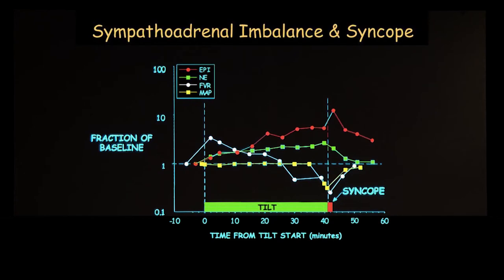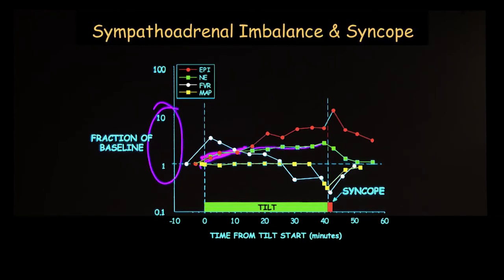In adults, autonomic nervous system malfunction is illustrated by the fainting reaction. I discovered this phenomenon of sympatho-adrenal imbalance, illustrated here in contrast with Cannon's idea of an emergency sympatho-adrenal system. You can see in this patient that at first norepinephrine and epinephrine go up together — this is on a fraction of baseline on a log scale — but then norepinephrine goes up a little bit while adrenaline is going up a lot.